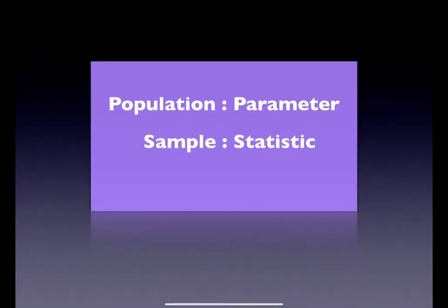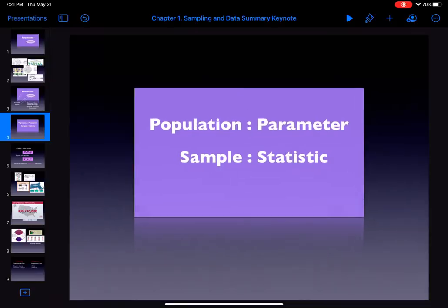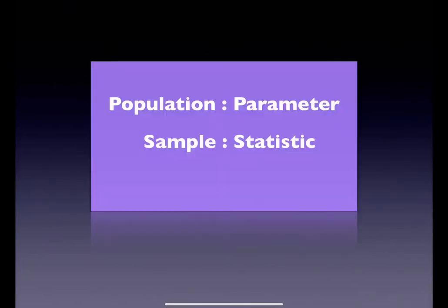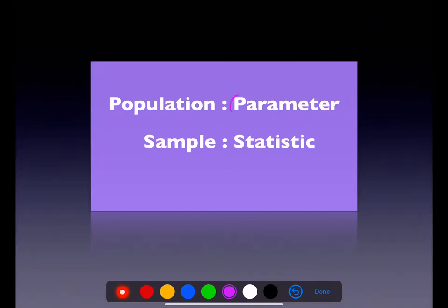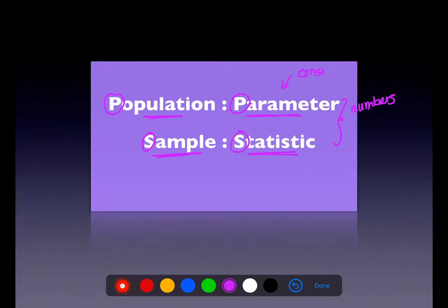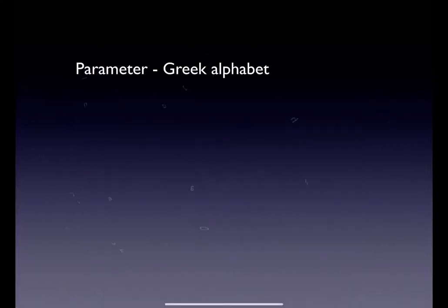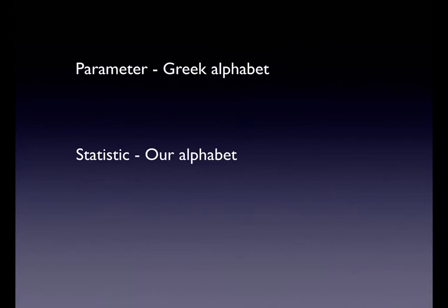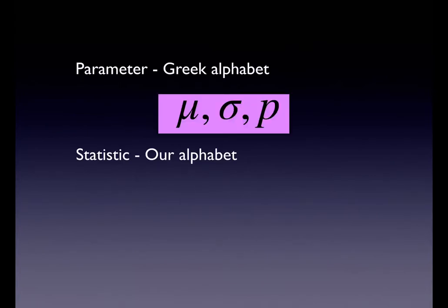A little word analogy: population is to parameter as sample is to statistic. The P words go together, the S words go together. Parameters and statistics are just numbers — they just come from different spots. Statistics come from samples; parameters come from populations. The only way to find a parameter is to run a census.